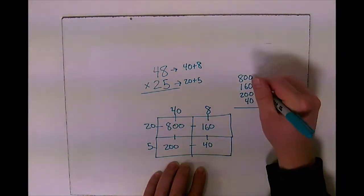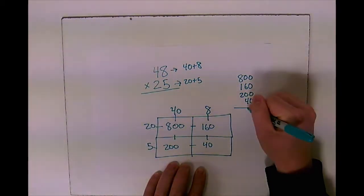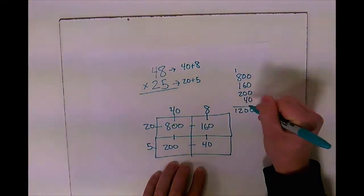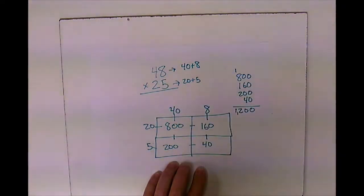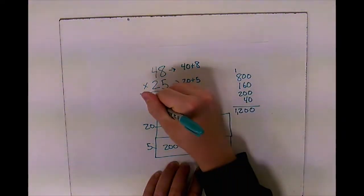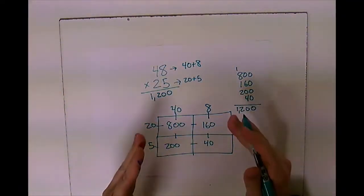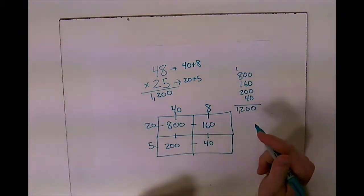That's all zeros. That's a 10, carry my one, that's 12. So my answer for 48 times 25 is 1,200. That is how you use partial products using a box to figure your answer.